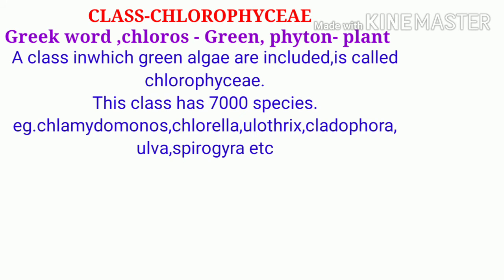Let's start this topic: Class Chlorophyceae. Chlorophyceae is derived from two Greek words — Chloros and Phyceae. Chloros means green, and phyton means plant. So we can say that a class in which green algae are included is called Chlorophyceae.